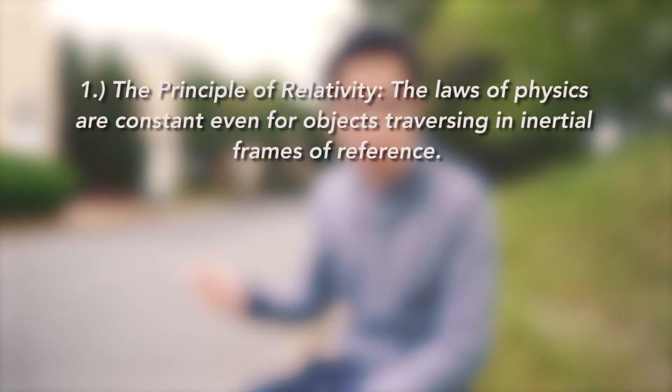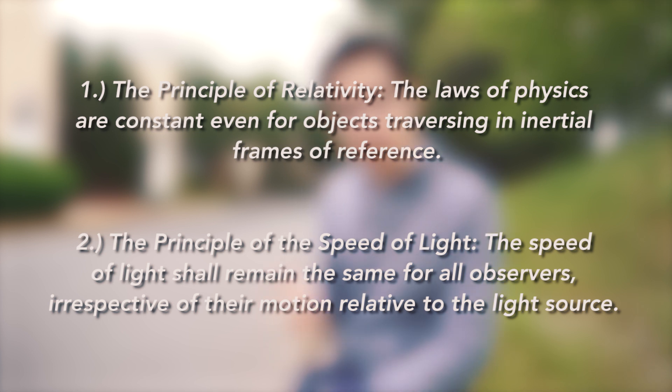Relativity is the field of study that deals with how observers in different reference frames measure the same event. Special relativity is founded on two main principles: the principle of relativity, which states that the laws of physics are constant even for objects traversing in inertial frames of reference; and the principle of the speed of light, which states that the speed of light shall remain constant for all observers irrespective of their relative motion to the light source. This theory essentially tells us how to interpret motion between different inertial frames of reference. Einstein said that we shouldn't base our frame of reference on something absolute, but rather on relative motion.